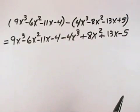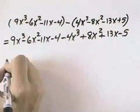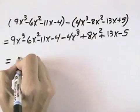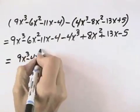At this point now, we can combine like terms. For example, we've got a 9x cubed and a minus 4x cubed, so we can group those together. So we'll have the 9x cubed and a minus 4x cubed grouped together.